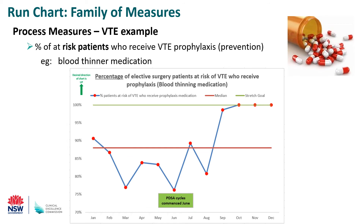This next chart for the VTE project is another process measure — the percentage of elective surgery patients at risk of VTE who received their prophylaxis, their blood thinning medication. They did some PDSA cycles in June, which resulted in 100% compliance in October, November, and December. The team is very happy with this outcome.